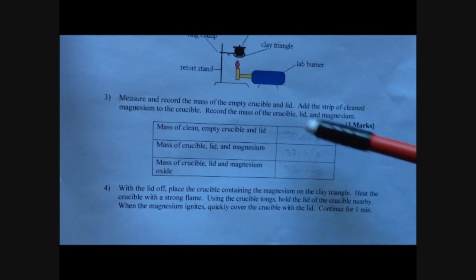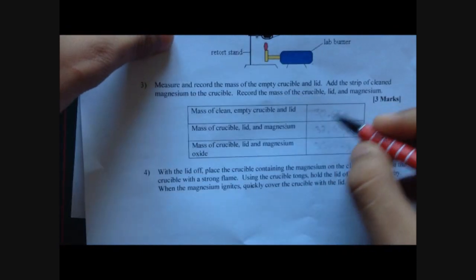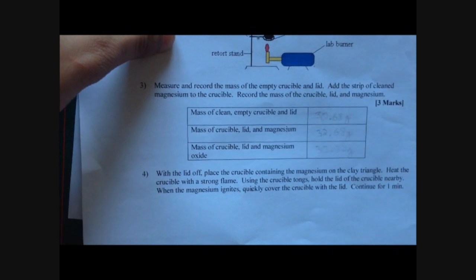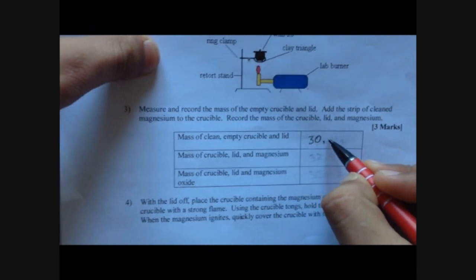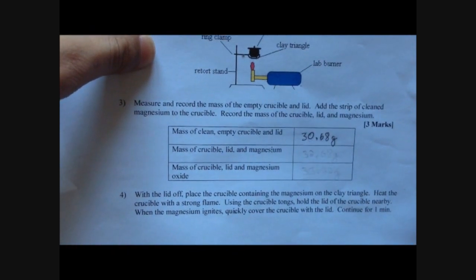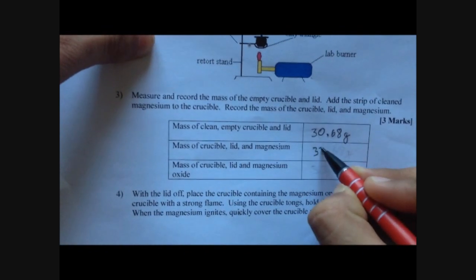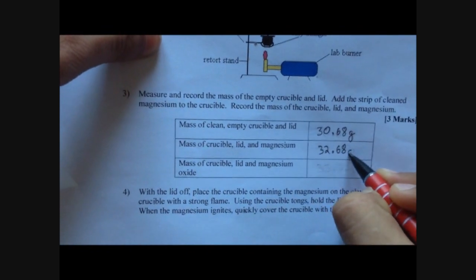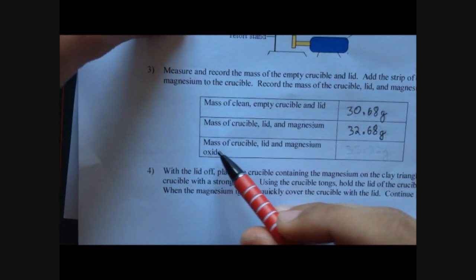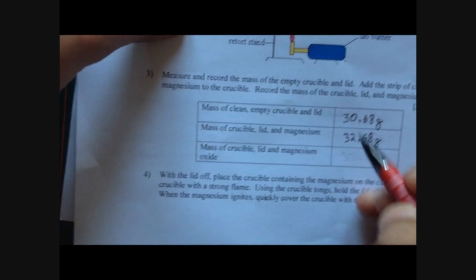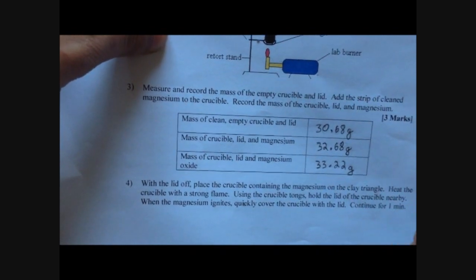Before we do our questions, let's go back to our observations. We had to record 3 masses. First: mass of clean, empty crucible and lid — 30.68 grams. Second: mass of crucible, lid and magnesium — 32.68 grams. Third: mass of crucible, lid and magnesium oxide after the experiment — 33.22 grams.